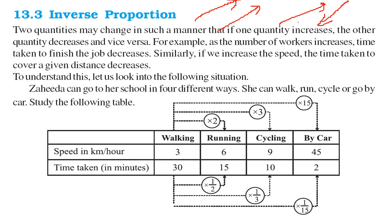So two quantities may change like this. The number of workers, if they increase, the time taken to finish the job will decrease. Also, if we increase the speed, the time taken to cover a given distance decreases.